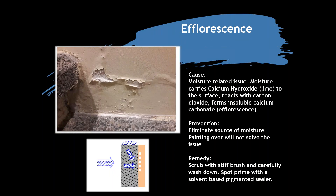Moving to cementitious substrates — efflorescence. This is only related to moisture. Moisture carries calcium hydroxide or lime to the surface, which reacts with carbon dioxide to form calcium carbonate — that's the efflorescence you see. To deal with this you must eliminate the source of moisture. Painting over it doesn't solve it — it will come back. Remedy it with a stiff brush and careful wash-down, then spot prime with a solvent-based pigmented sealer.